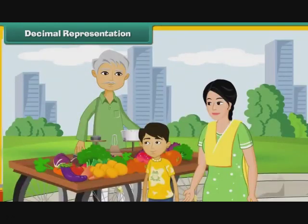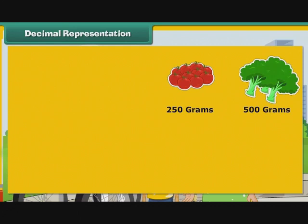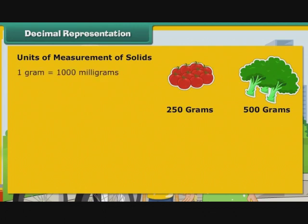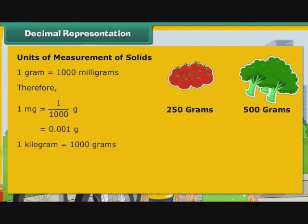Akshay accompanied his mother to the vegetable market. There, he saw his mother buy 250 grams and 500 grams of different vegetables. He wanted to express the quantities purchased as kilograms. To be able to do so, Akshay must first understand the units used to measure quantities of solids. 1 gram is equal to 1000 milligrams. Therefore, 1 mg is equal to 1 by 1000 gram, that is equal to 0.001 gram. 1 kilogram is equal to 1000 grams. Therefore, 1 gram is equal to 1 by 1000 kg, that is equal to 0.001 kg.